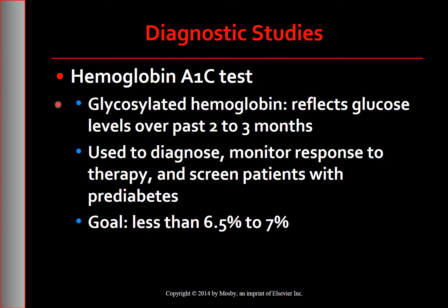This glucose remains attached to the red blood cells for the life of the red blood cell, which is approximately 120 days or about 3 months. Therefore, the hemoglobin A1c test provides a measurement of glycemic control over the previous 2 to 3 months, with increases in the A1c reflecting elevated blood glucose or poor glucose control. The A1c has advantages over the FBG including greater convenience because fasting is not required. Diseases affecting RBCs, such as iron deficiency anemia or sickle cell anemia, can influence the hemoglobin A1c level and should be considered in interpreting test results.